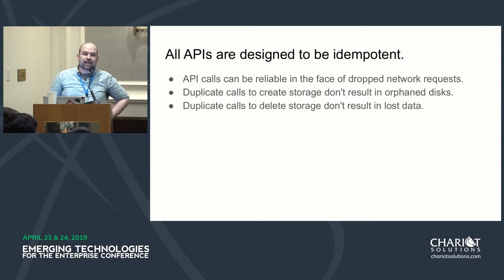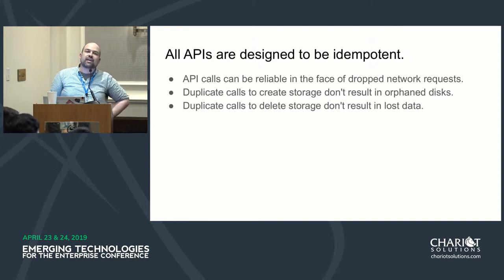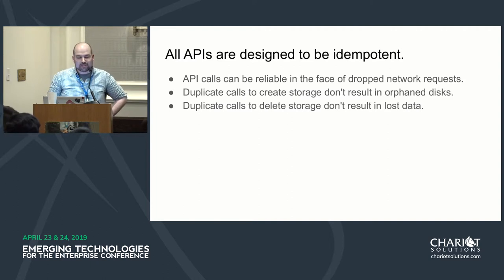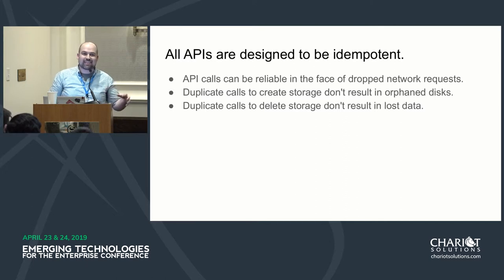All APIs are designed to be idempotent. This is very important. When you're designing an API, you don't want side effects to happen if you make the same API call with the same parameters. So in CSI, the GRPC call for create is 'create A' — not just 'create', but 'create A'.